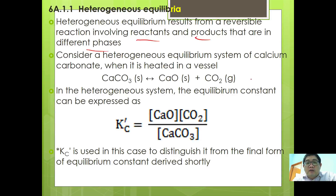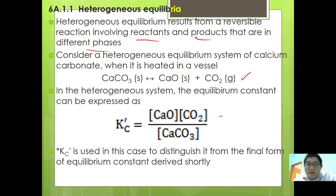CaCO3 gives CaO plus CO2. In the heterogeneous system, the equilibrium constant Kc0 can be expressed as [CaO] times [CO2] over [CaCO3]. Kc0 is used here to distinguish it from the final form of the equilibrium constant derived shortly.